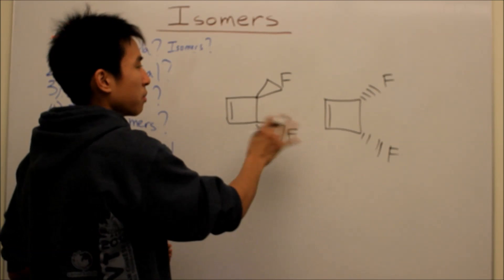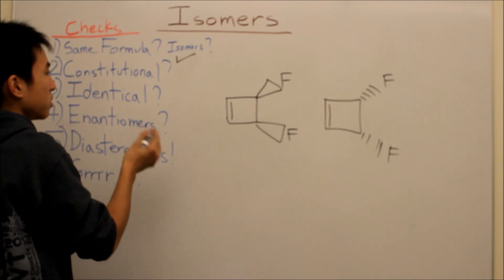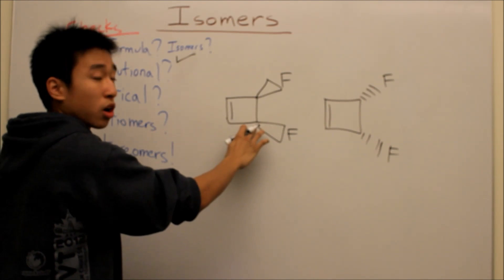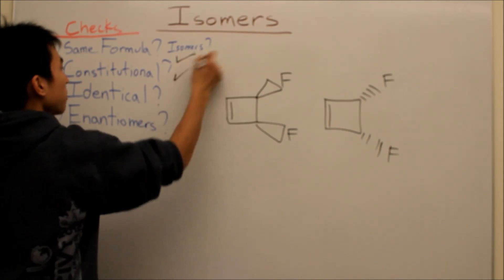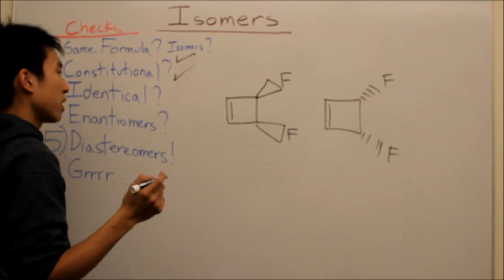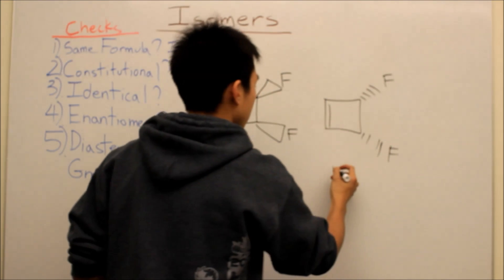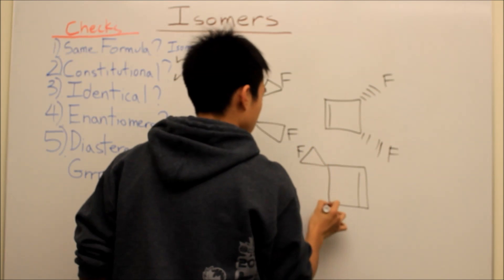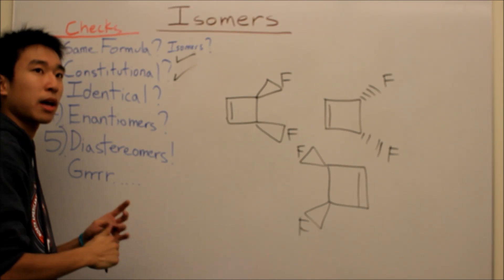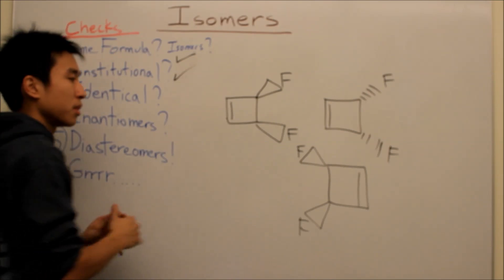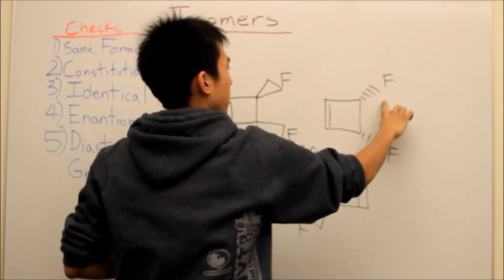Now let's look at these two molecules. They look about the same — they have the same number of carbons and the same number of fluorines, so that affirms the same formula check. They are isomers. They're constitutionally the same because this fluorine is connected to a carbon that has a neighboring fluorine right here, and the same is true for the other molecule. So they are constitutionally the same. Are they identical? You can pull it out and then flip it — what's in the back will come to the front.